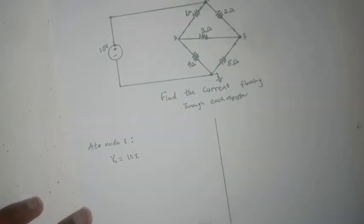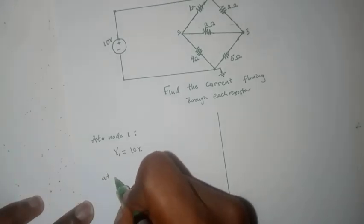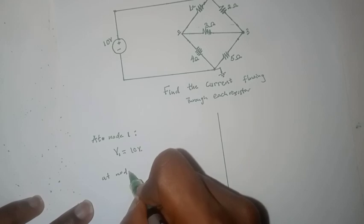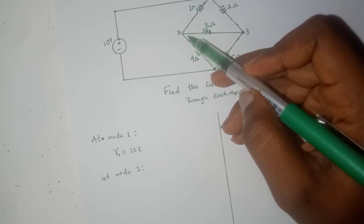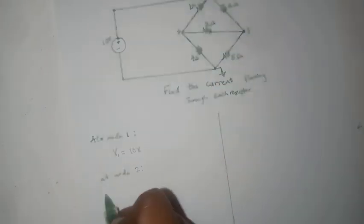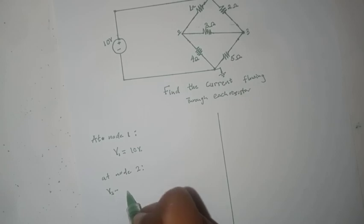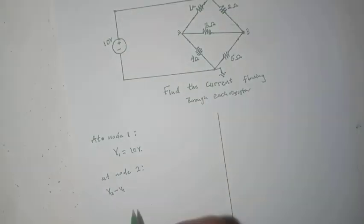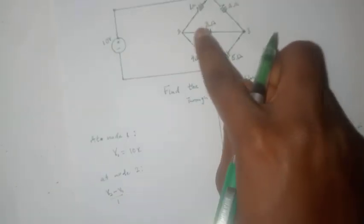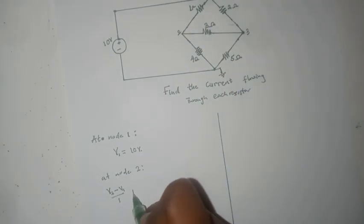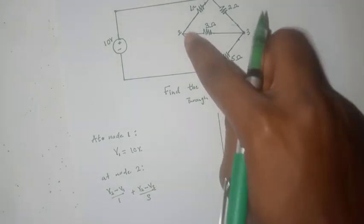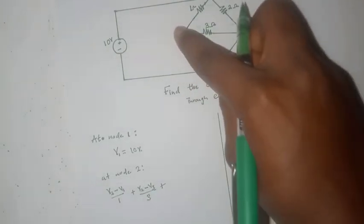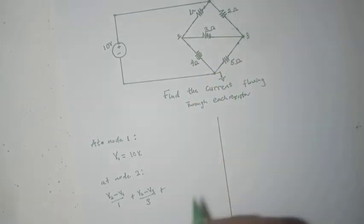We can now proceed to node 2 and write KCL at node 2. For this branch, that would be V2 minus V1 divided by 1, plus V2 minus V3 divided by 3, plus V2 minus 0 (that's the reference node).